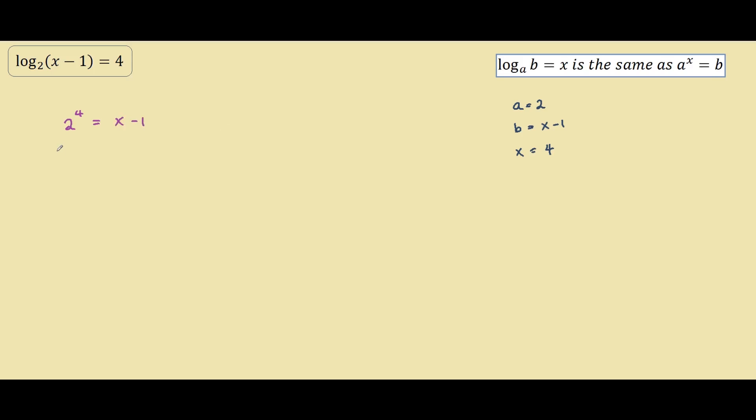If we solve this, we know that 2 to the power of 4 is simply 2 times 2 times 2 times 2, which is 16, equals x minus 1. Therefore our x equals 17.